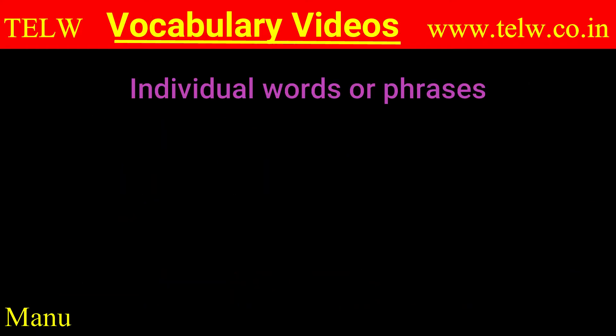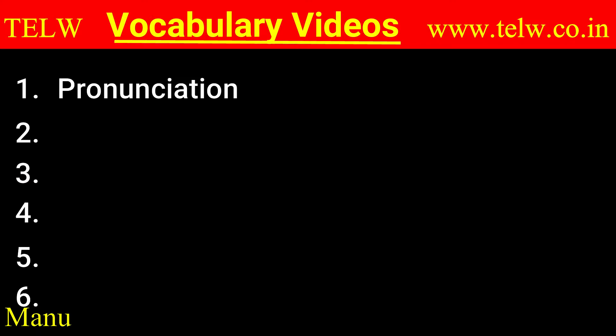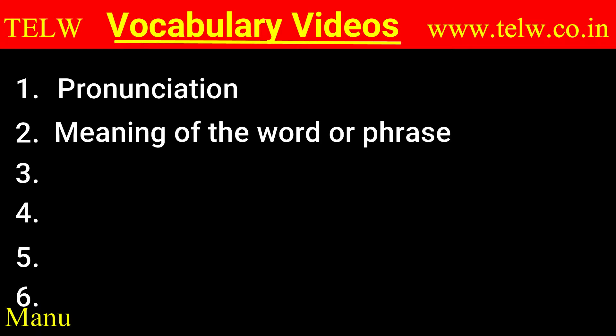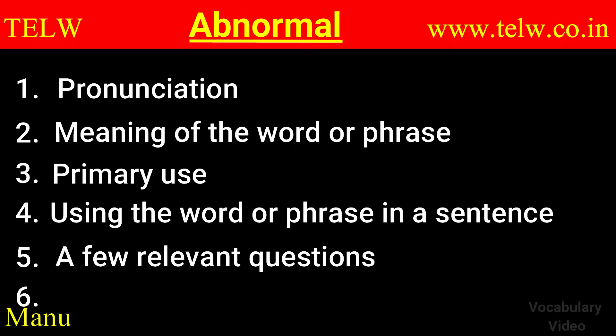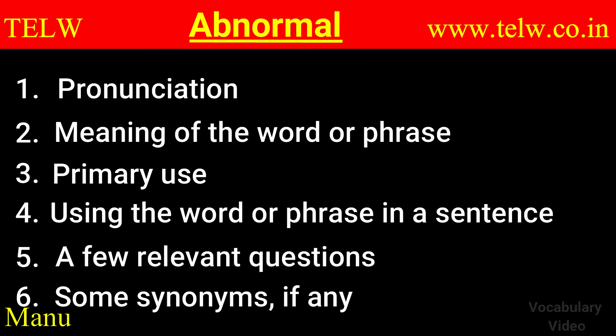In this series of vocabulary videos, we are going to look at individual words or phrases and discuss six aspects: pronunciation, meaning, primary use, using the word or phrase in a sentence, a few relevant questions, and synonyms, if any.